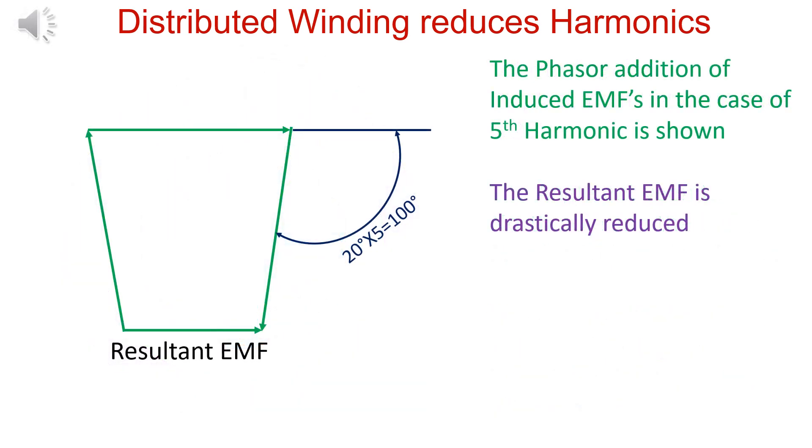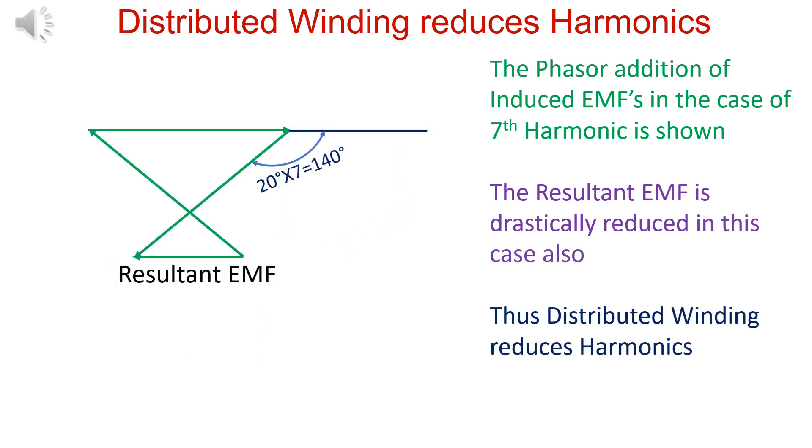Phasor addition in case of fifth harmonic is done. And it is seen that resultant EMF is drastically reduced. Thus distributed winding reduces harmonics.